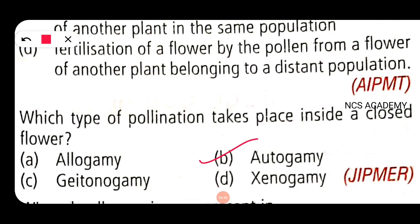Autogamy, or self-pollination, occurs in plants that show synchronization in pollen maturation and stigma receptivity, and where the two are placed in proximity. Flowers that never expose their sex organs — for example, cleistogamous flowers — show autogamy. Cleistogamous flowers never open, so autogamy is the right answer.